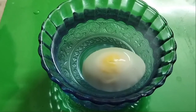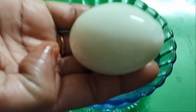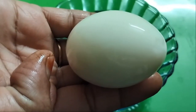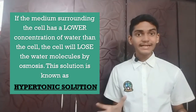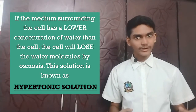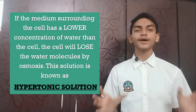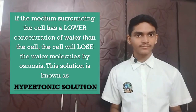After keeping the egg in the salt solution for four to five hours, the egg has shrunken and lost water molecules through osmosis. This is known as a hypertonic solution. If the medium surrounding the cell has a lower water concentration than the cell, then the cell will lose water molecules by osmosis, and this is known as a hypertonic solution. I hope you have understood these activities. Thank you and have a great day.